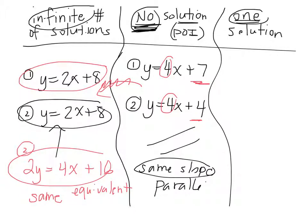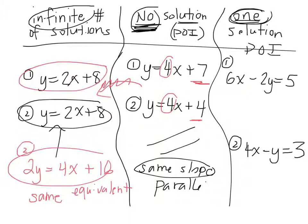So for the last one, one solution means they only have one point of intersection, and I'll give you two equations, and I want you to tell me what these equations are in slope-intercept form. So here's one, here's two, equals three. That's supposed to be a three. Okay, so I want to know what equation one is in slope-intercept form, and then equation two in slope-intercept form.